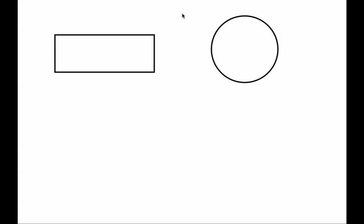Hello, mathematicians, and welcome to another video. Today, we are going to be talking about geometry and partitioning a rectangle and a circle into three equal shares. In the previous video, which you might want to take a look at, I discussed breaking a rectangle and a circle into two equal shares, and we learned that each of those shares was called a half. Today, we're going to be breaking our whole rectangle and circle up into three equal shares, and we'll figure out what that is called as well.